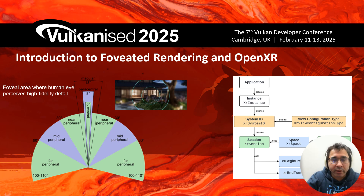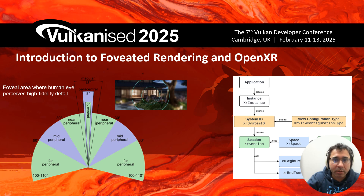So what is foveated rendering? The idea is that it's a technique that reduces the image quality in the areas of a display that are not in the direct line of sight for a user. As a human, your eyes are mostly focused on what is called the foveal area, where you perceive the most high-fidelity details. The rest of the peripheral area — near peripheral, mid peripheral, or far peripheral — plays a key role in motion perception but not in spatial high-fidelity detail.